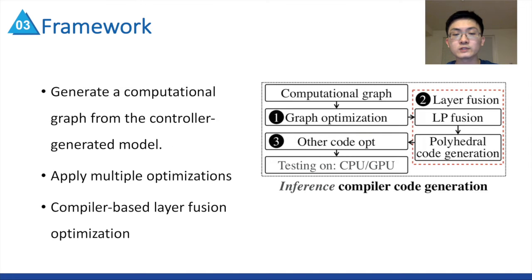Third, employ code generation and optimization to generate and further optimize the inference code. The generated inference code is tested on mobile devices. According to the feedback from the device side, the controller makes a better trade-off between model accuracy and latency.